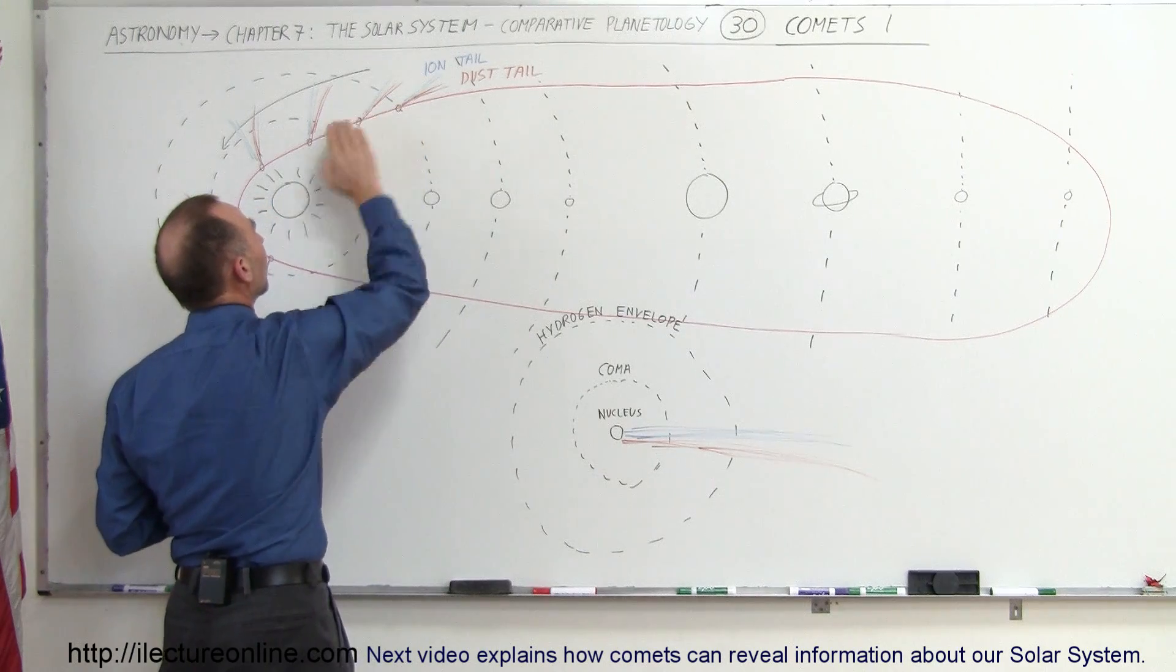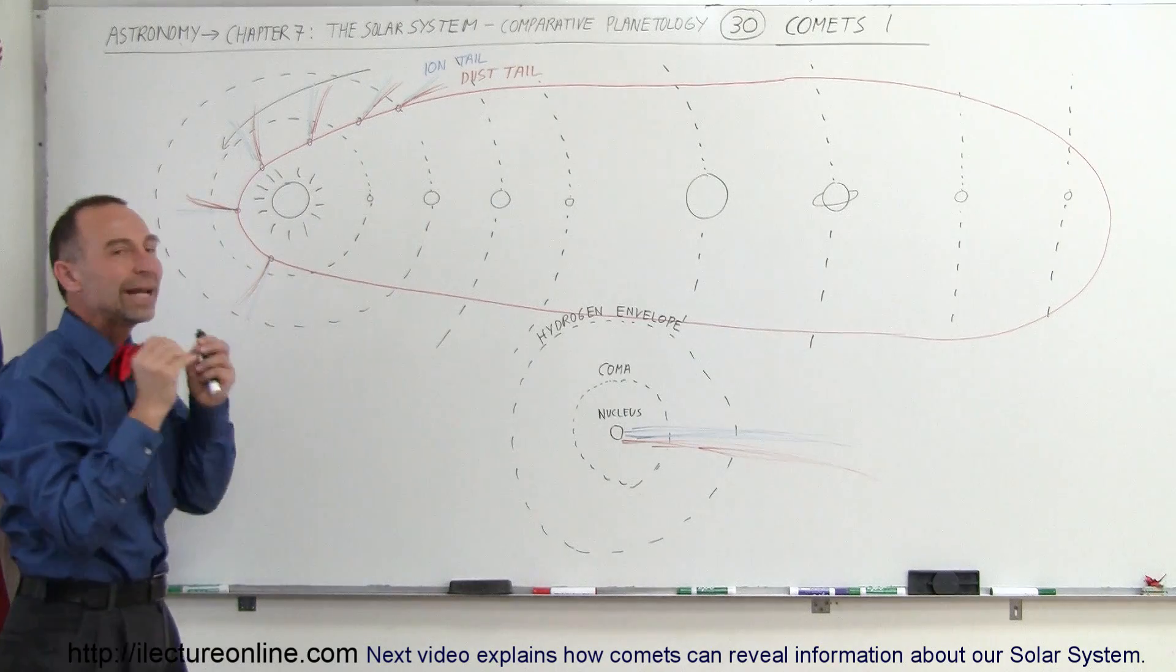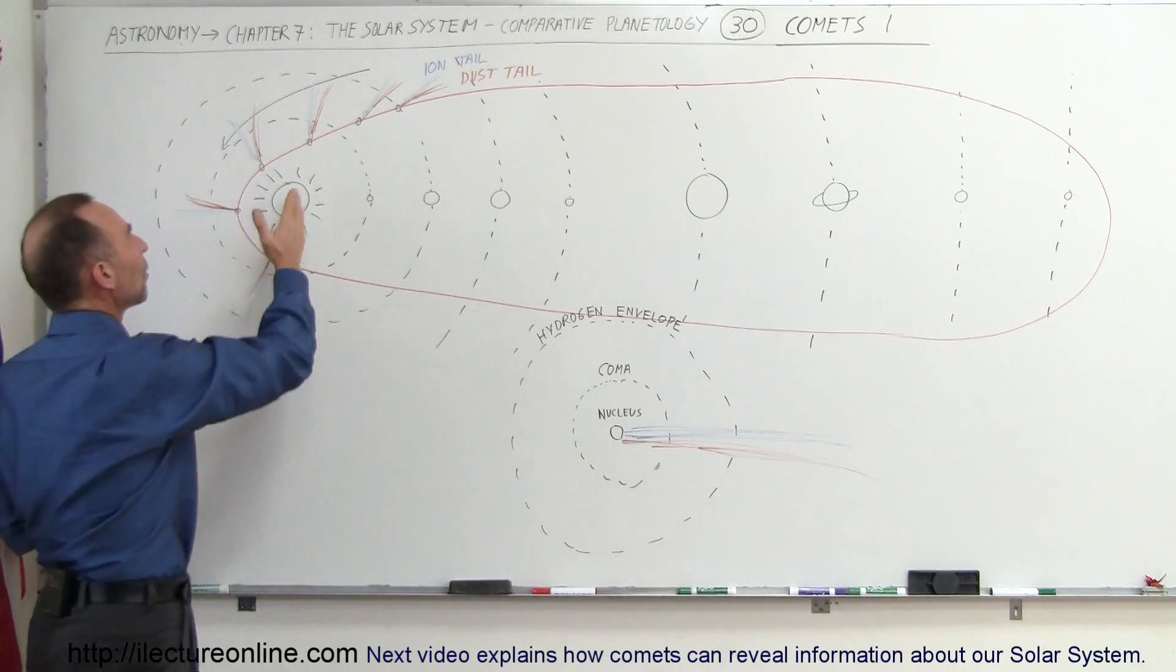The ion tail always is positioned directly away from the sun because it's the radiation and the solar wind that causes the ions to streak away from the comet.